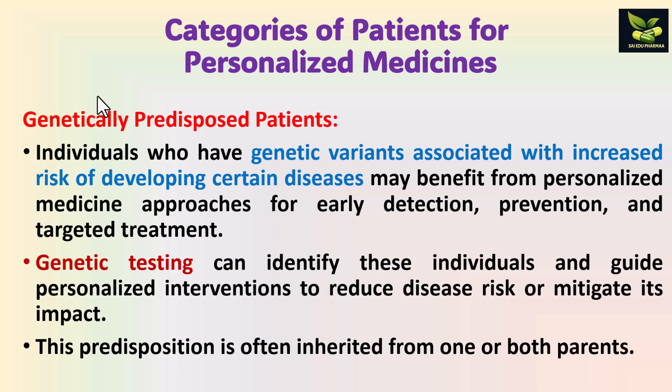First are genetically predisposed patients — those who have genetic variants associated with increased risk of developing certain diseases. For these patients, the personalized medicine approach is very important, as early detection, prevention, and targeted treatment could be achieved. We perform genetic testing so that genetic variants can be identified and personalized interventions are guided accordingly.